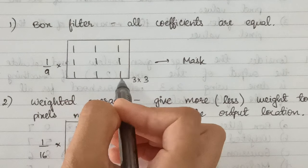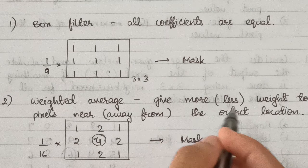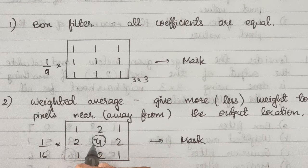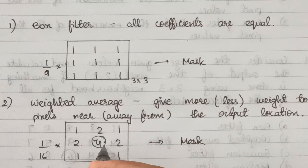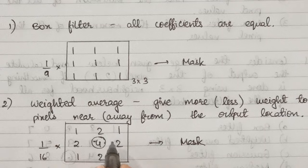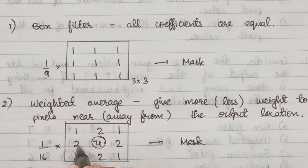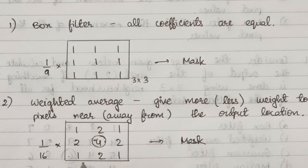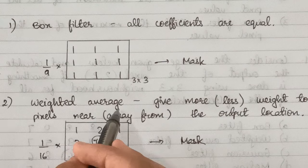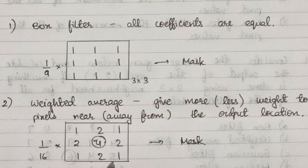The next one is weighted average filter. Here more weight is given to pixels near the output location. The center pixel is always the output location, and the neighbors which are closer by 4-neighbor adjacency have more weight, while the diagonal values have less weightage. It is multiplied by 1 by 16 because if you take the sum of all of these values it is equal to 16.